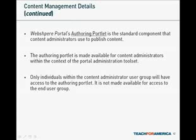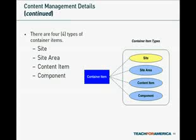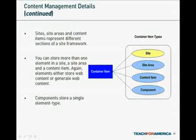Elements either store web content or generate web content. Elements do not exist as freestanding items — you store elements in container items. Container items can be thought of as files or documents used to store web content, metadata (information about the web content), and access control information, or rights and privileges to view and maintain content. There are four different container item types: site, site area, content item, and component. Sites, site areas, and content items represent different sections of a site framework. You can store more than one content element in a site, a site area, and a content item. Components store a single element type.